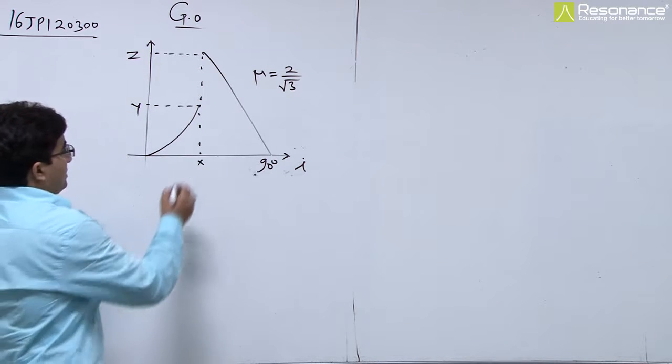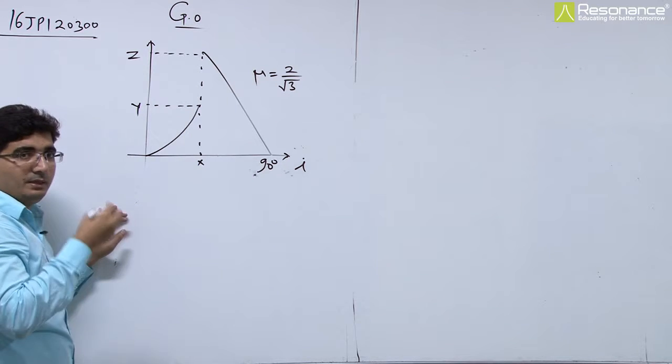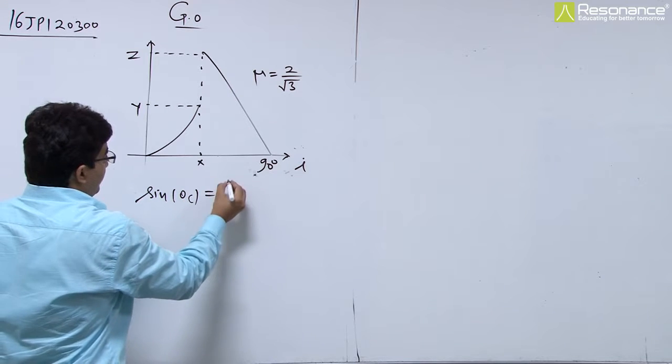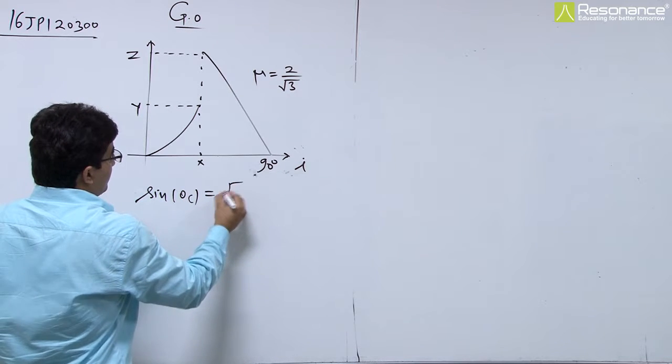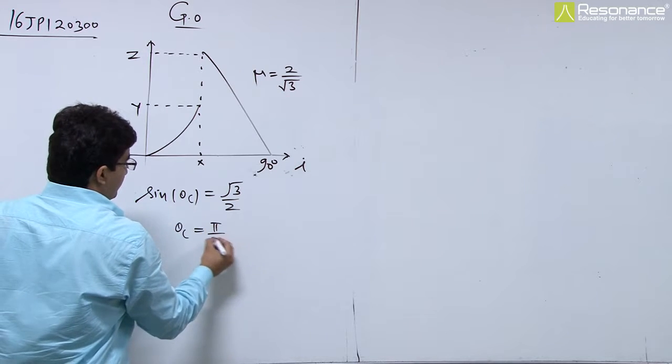This point is of TIR, means critical angle. So the critical angle for this: sin theta c equals 1 by mu, which is root 3 by 2. So theta c equals pi by 3.